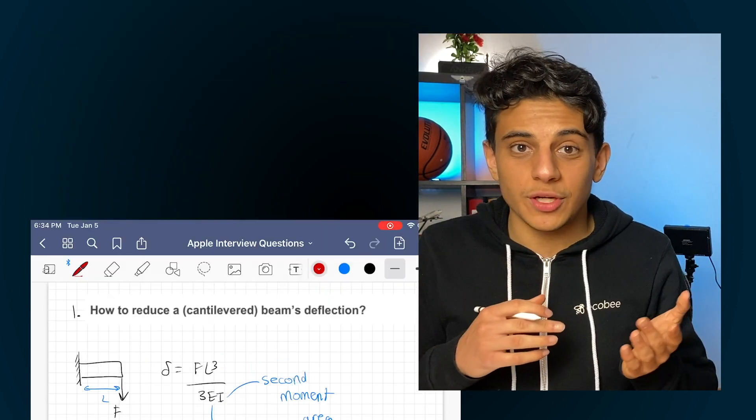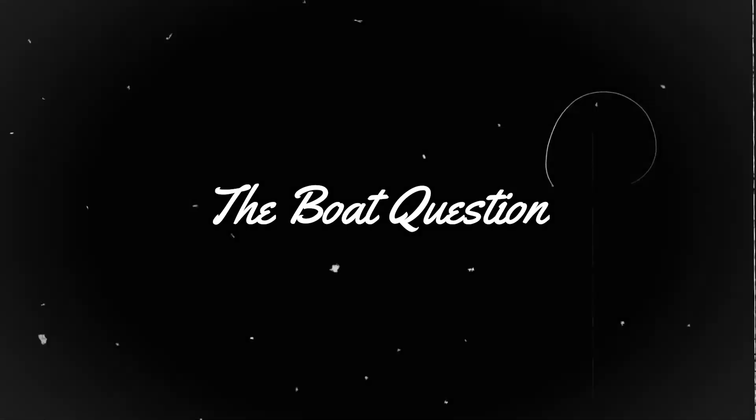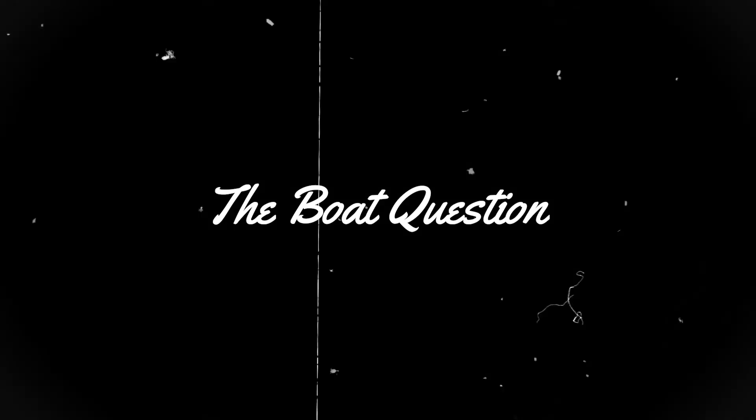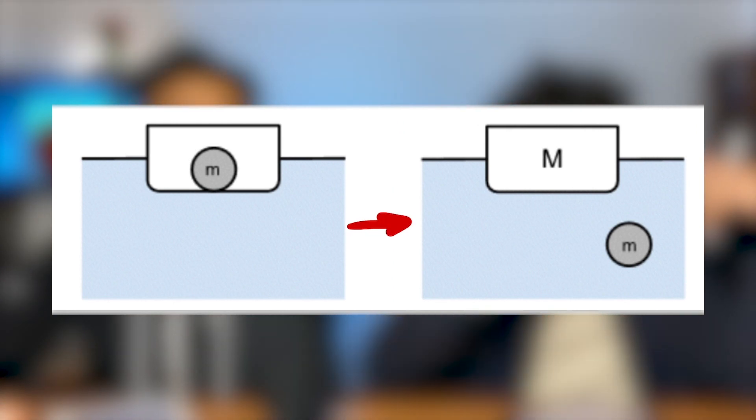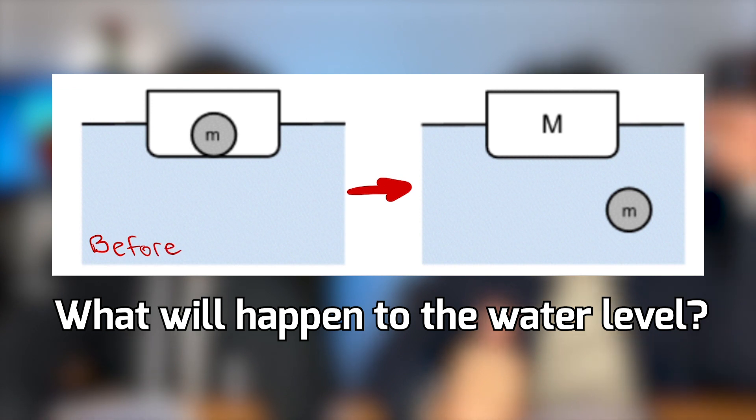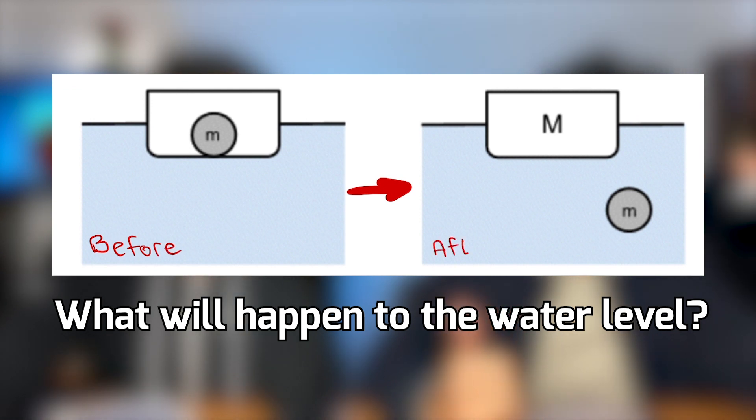That's the answer for the first question. The second question looks at a scenario: if you are in a boat with a ball, and the boat is floating in the water, and you throw the ball overboard so it sinks and completely submerges — what would happen to the water level? Would it rise, fall, or stay the same?